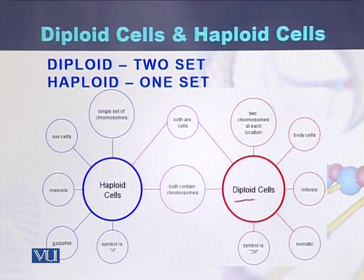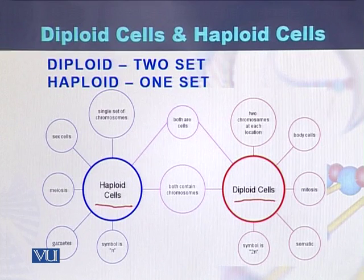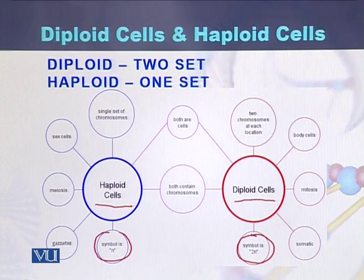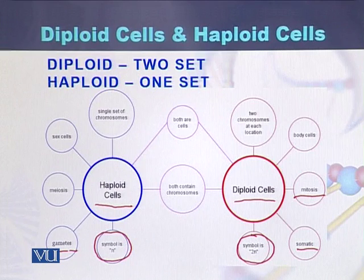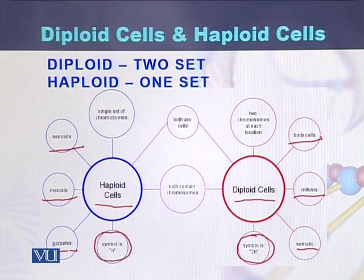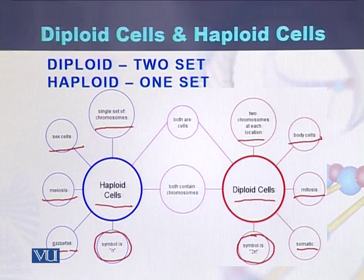Here is an example of a diploid cell and a haploid cell. In diploid cells the symbol is 2N, while in haploid cells the symbol is N. Diploid cells are somatic — meaning body cells are made of diploid cells — while gametes are made of haploid cells. Diploid cells divide by a process called mitosis, while haploid cells are produced as a result of meiosis. Diploid cells are present in the body cells, while haploid cells are the sex cells.